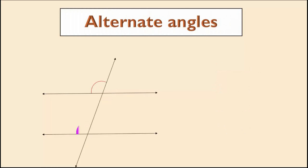If the pair of angles resembles the letter Z, they are called alternate angles or Z angles. When a transversal intersects a pair of parallel lines, each pair of alternate interior angles is equal. Here, angle 4 equals angle 5 and angle 3 equals angle 6.